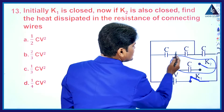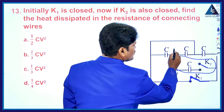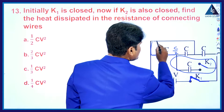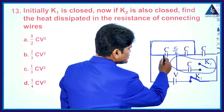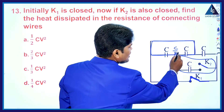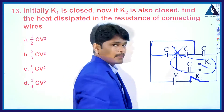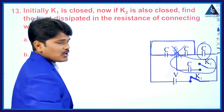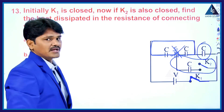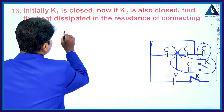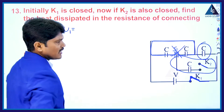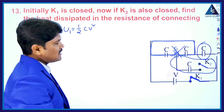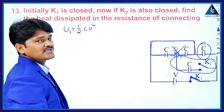With only k1 closed, the two capacitors C and C are connected in series giving effective capacitance C/2. However, their positive and negative terminals are connected with a wire, so they are short-circuited, leaving only C in the circuit. The energy U1 when k1 is closed is therefore U1 = ½CV².